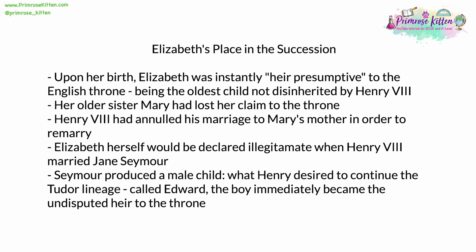Upon being born, Elizabeth was instantly heir presumptive to the English throne. She was the oldest child who had not yet been disinherited by Henry VIII, meaning it was presumed that she would become queen following his death. Her older sister Mary had lost her claim to the throne, being disinherited by Henry VIII. As Henry VIII had annulled his marriage to Mary's mother in order to remarry, Elizabeth herself would indeed be declared illegitimate when Henry VIII married Jane Seymour. Critically, however, Seymour produced a male child — something Henry VIII greatly desired, and the reason why he continued marrying different women. This continued the Tudor lineage, and the child was called Edward.